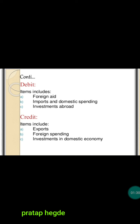What are the components or factors of balance of trade? The items that are debited from the country's economy are foreign aid, imports, domestic spending, and investments abroad. The credited items include exports, foreign spending, and also investments in the domestic economy. These are the basic components of the balance of trade.